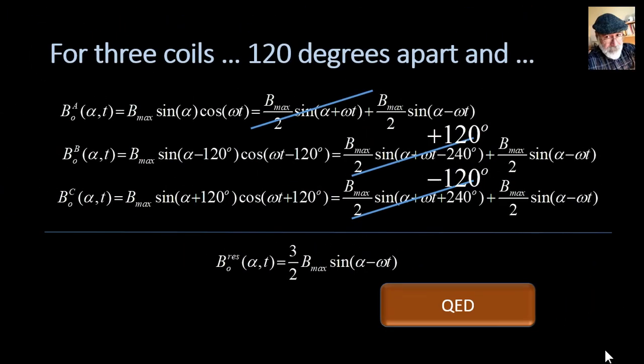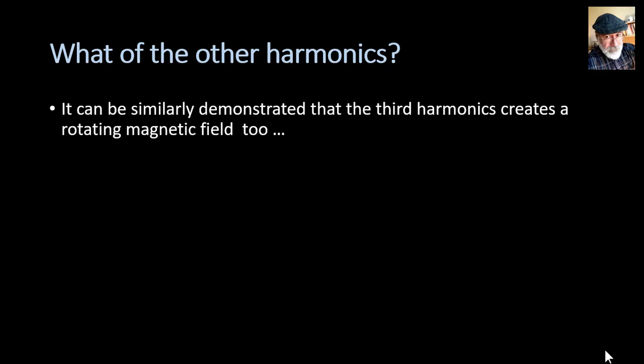But wait, you say, you are concentrating only on the fundamental component of the square wave. What happens with the third harmonics and the fifth and all the others? Well, the same way we worked with the fundamental, we could have worked with the third harmonics and realized that it also creates a rotating magnetic field that is one third in strength and rotating at one third the speed of the fundamental. This is interesting.